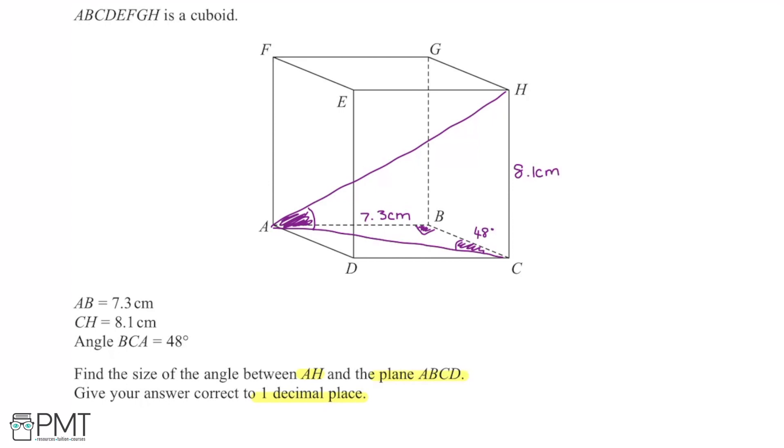So if I draw the triangle ABC out again, just to make it a bit easier to work with, we have the right angle obviously, and then we have the angle BCA, which is 48 degrees. We also have the side length AB, which is 7.3 centimeters.